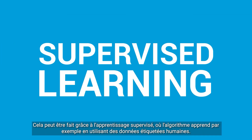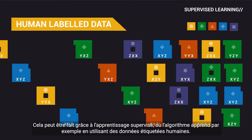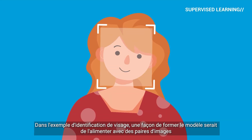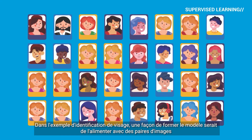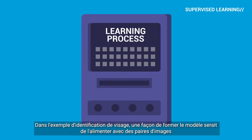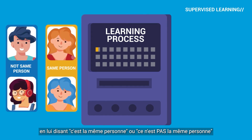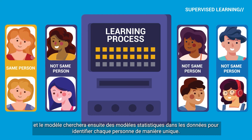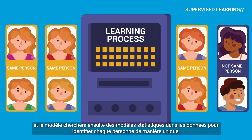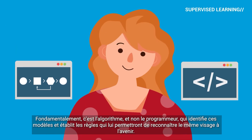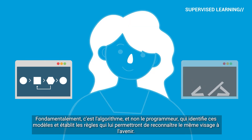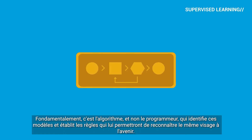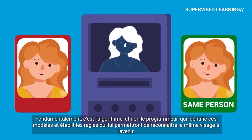This can be done through supervised learning, where the algorithm learns by example using human-labeled data. In the Face ID example, one way to train the model would be to feed it with pairs of images, telling it 'this is the same person' or 'this is not the same person,' and the model will then seek statistical patterns within the data to identify each person uniquely. Crucially, it's the algorithm, not the programmer, that identifies these patterns and establishes the rules, which will enable it to recognize the same face in the future.